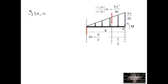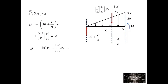For the moment M, summation of moment at point O equals 0, considering counterclockwise positive: M minus (20 plus P over 3) times X plus 3X squared over 40 times X over 3 equals 0. Simplifying: M equals 20X plus XP over 3 minus X cubed over 40. The partial derivative of M with respect to P equals X over 3.